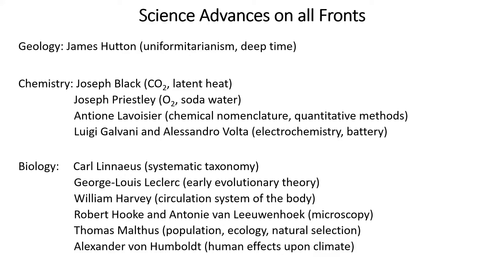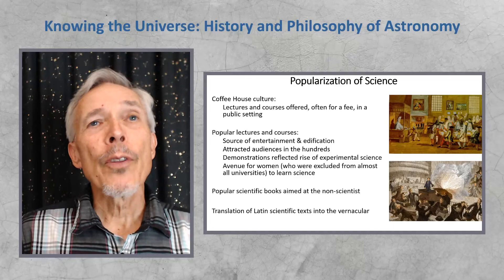From Galvani and Volta, we have the beginning of electrochemistry and the invention of the battery. In biology, we have Carl Linnaeus, who gave us the taxonomy of living creatures still used today, and Leclerc, preceding Darwin with early evolutionary theory, and Harvey with his circulation system of the body. Hooke and Leeuwenhoek used the microscope to look at the world of cells for the first time. At the level of populations, Malthus developed ideas that eventually became ecology, and Humboldt gave us the beginnings of climate science.